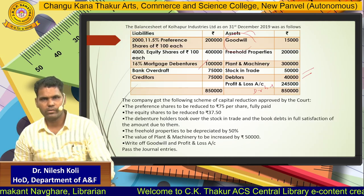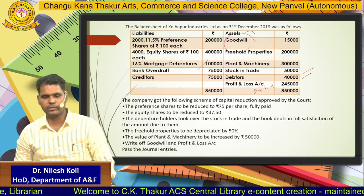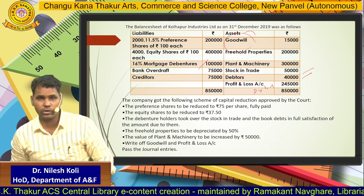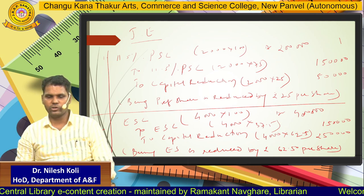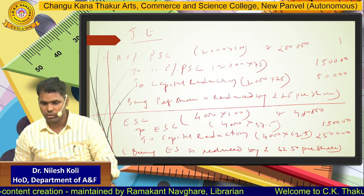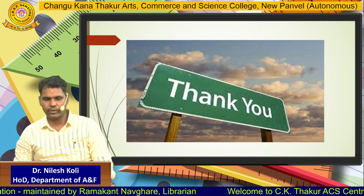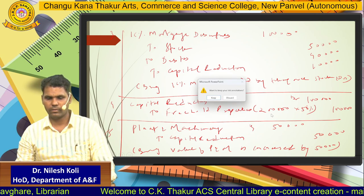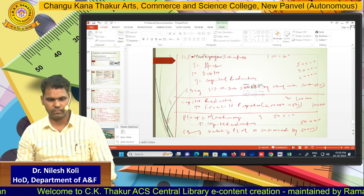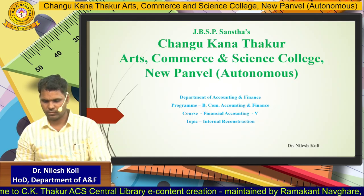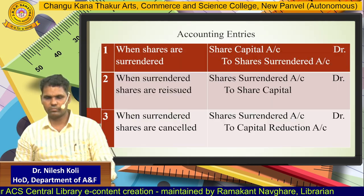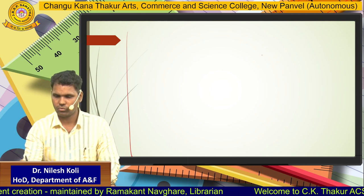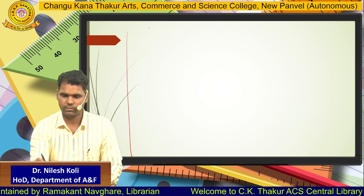Further, we have to write off goodwill and P&L account. But first we need to check the balance in the capital reduction account — wherever it is credited, we add it; wherever it is debited, we reduce it. So we will calculate the balance of the capital reduction account now.